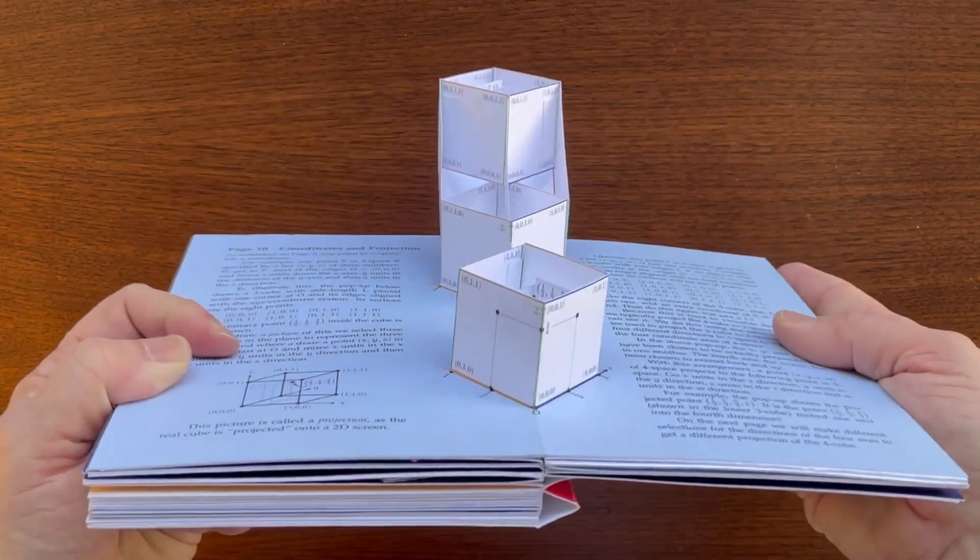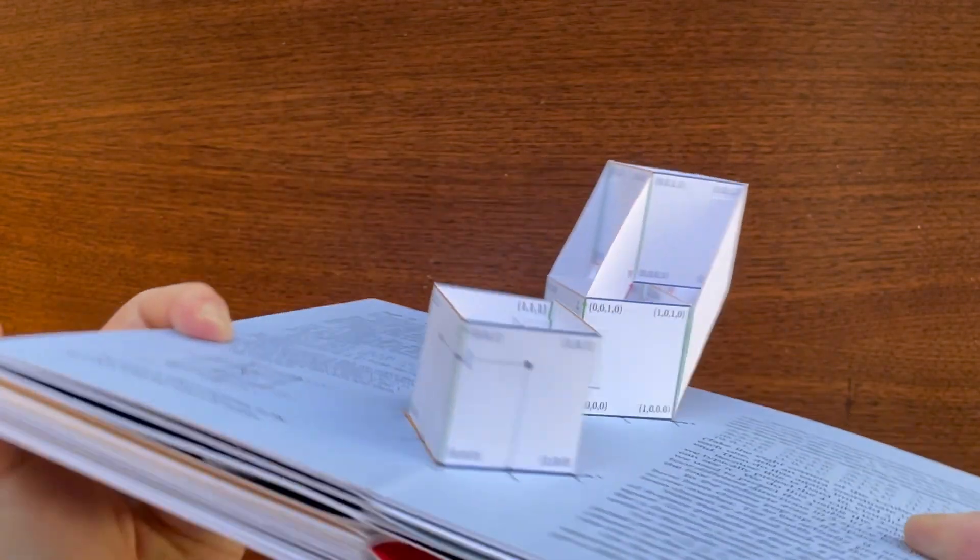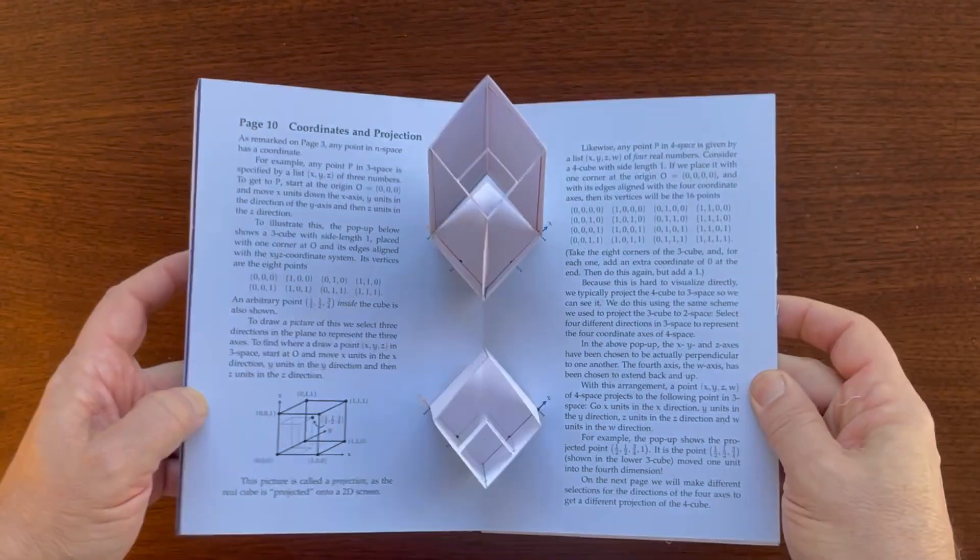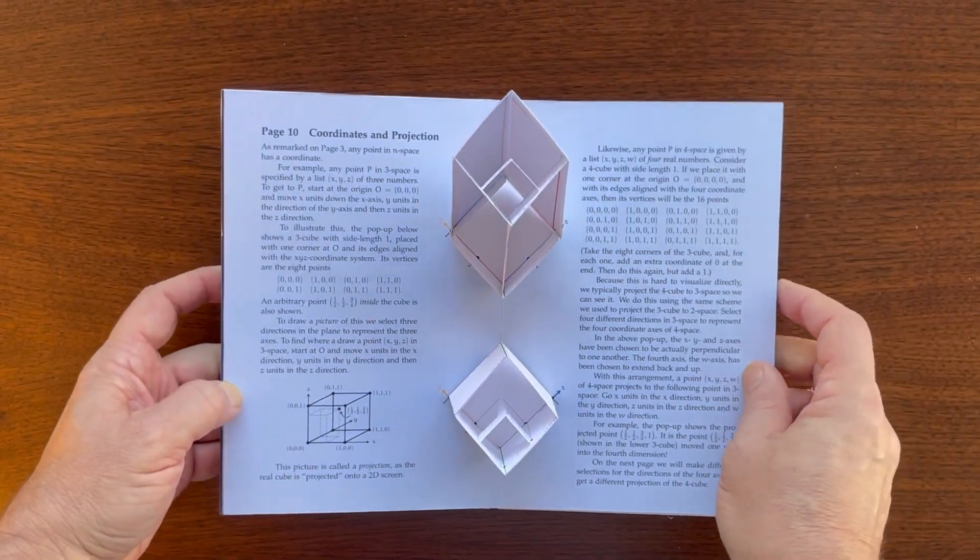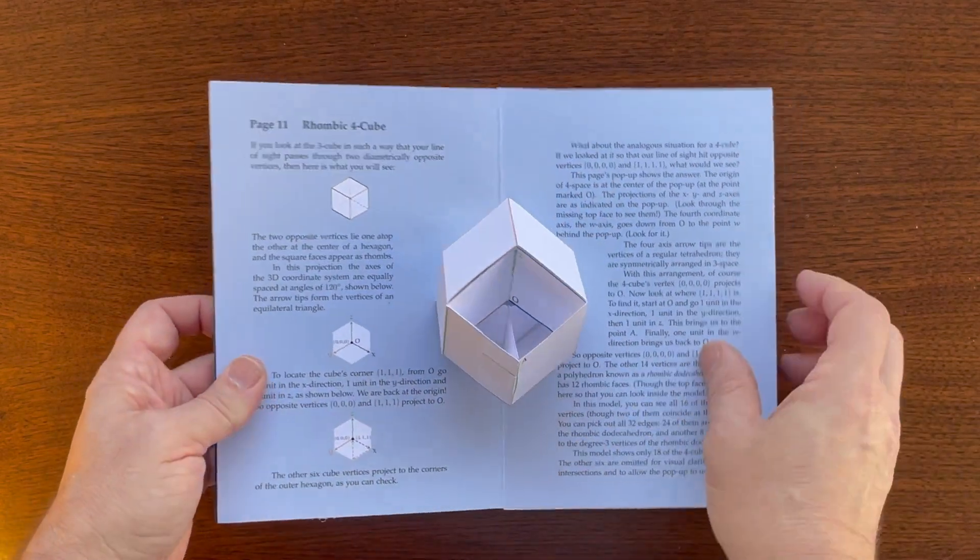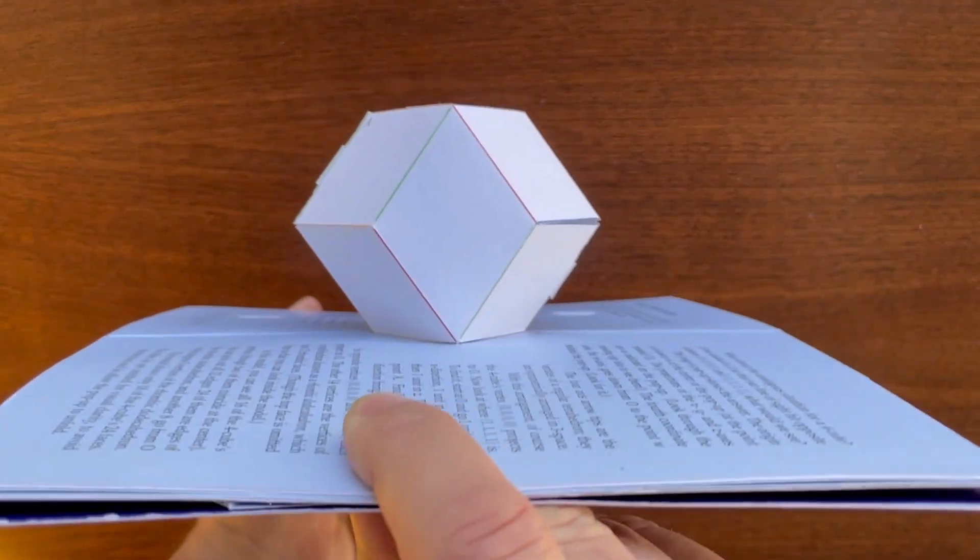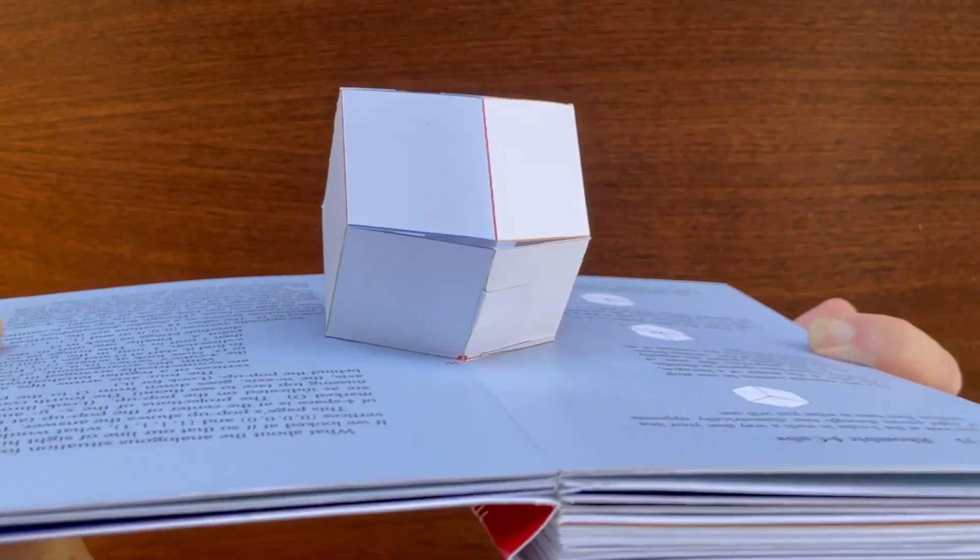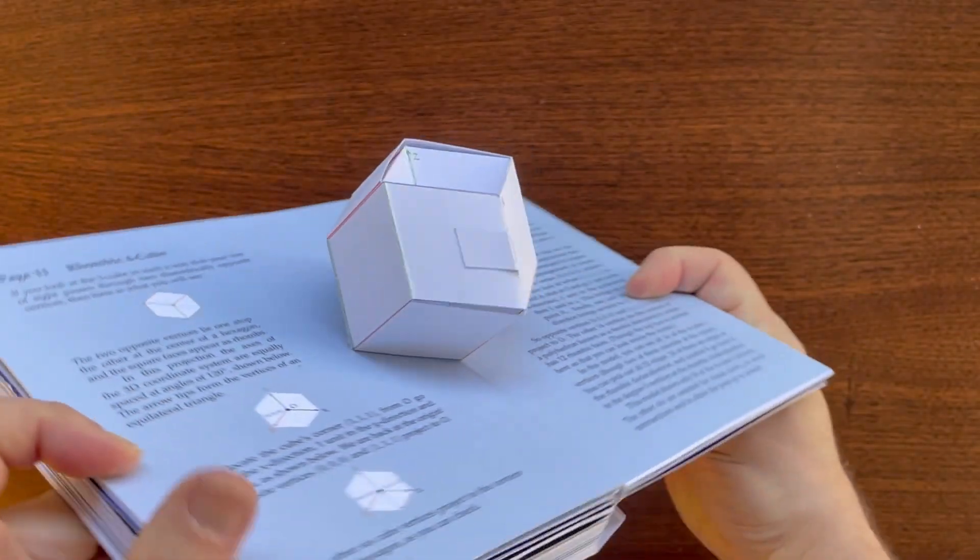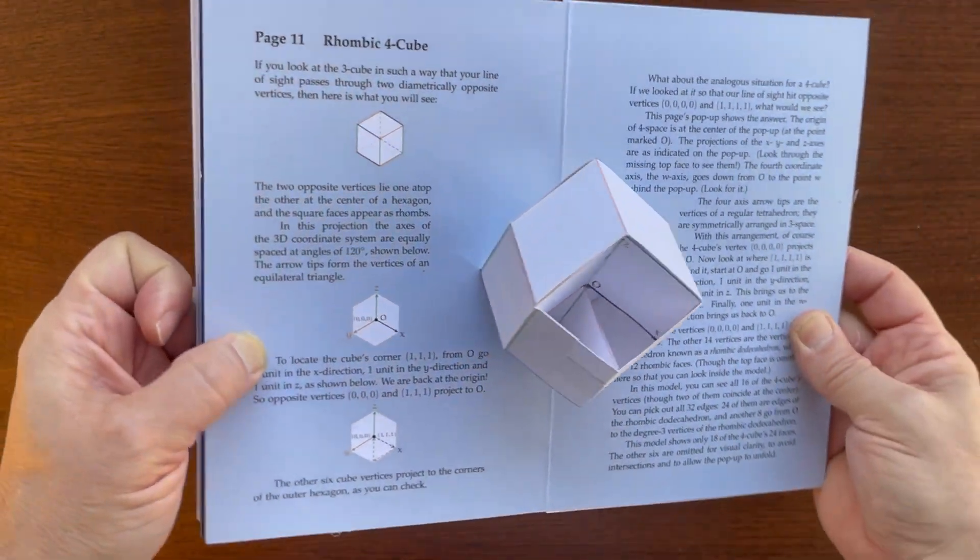Next, a discussion of coordinates and projection. This is a tesseract projected to three-dimensional space through opposite vertices. It has the form of a rhombic dodecahedron with some internal rhombi. The face at the top is omitted, so you can look in and see the structure.